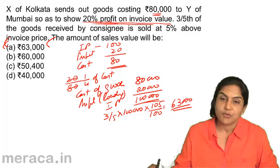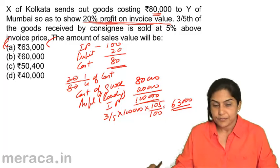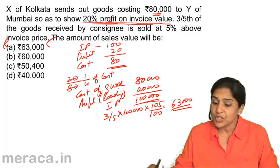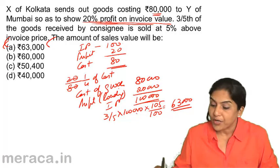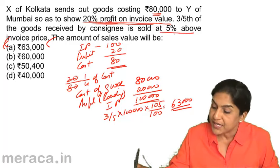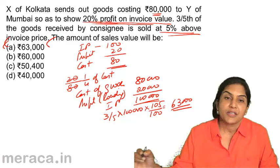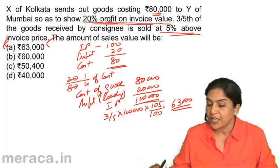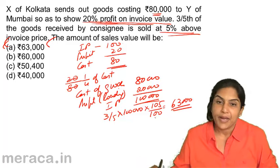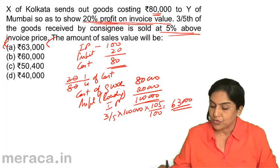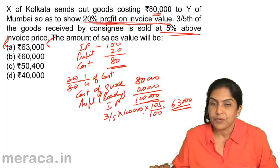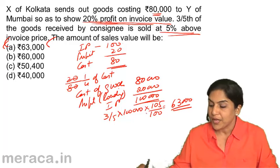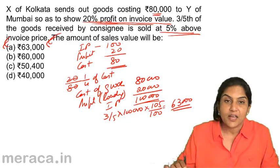Total invoice price must be 1,00,000. So how much is sold? Three-fifths of 1,00,000 is sold at 5% above the invoice price — that is, × 105/100, or alternatively 3/5 of 1,00,000 plus 5% of 3/5 of 1,00,000. Either way, we get 63,000.